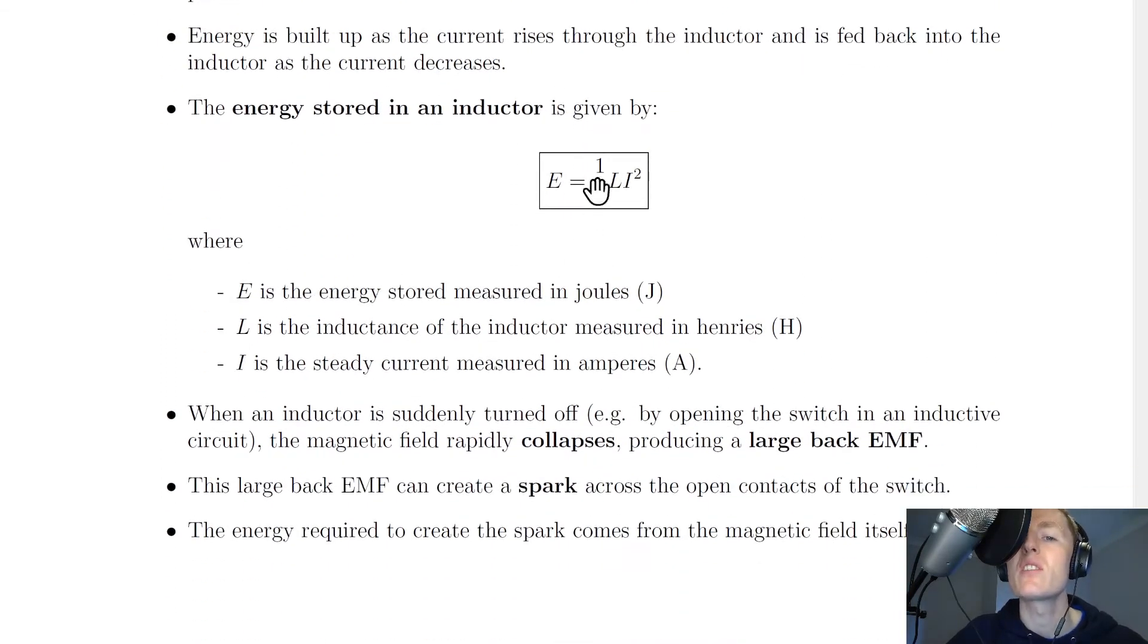The energy stored in an inductor is given by this equation here which you'll get on the relationship sheet in the exam. E equals a half Li squared, where E is the energy stored measured in joules, L is the inductance of the inductor measured in henries, and I is the steady current measured in amperes.